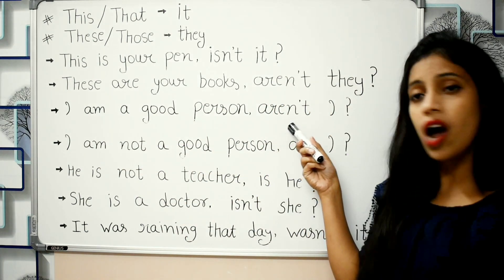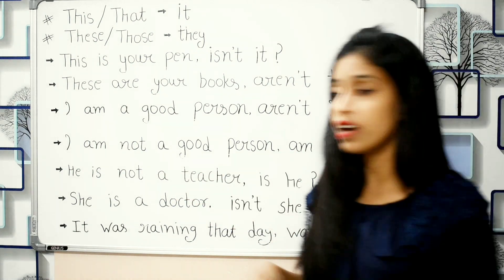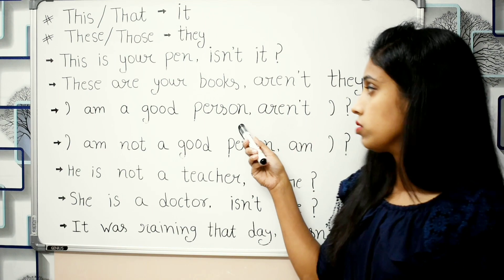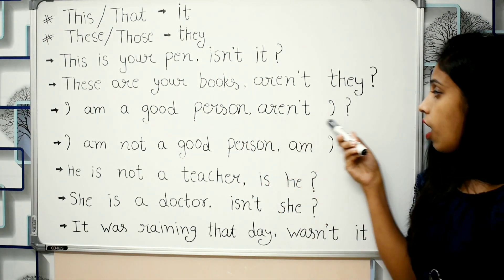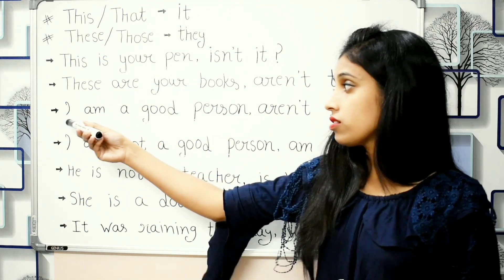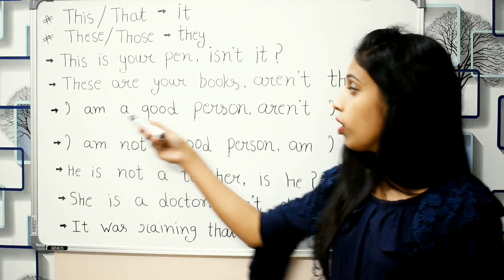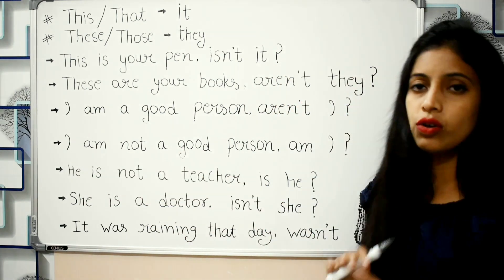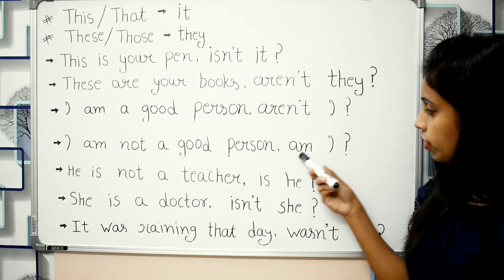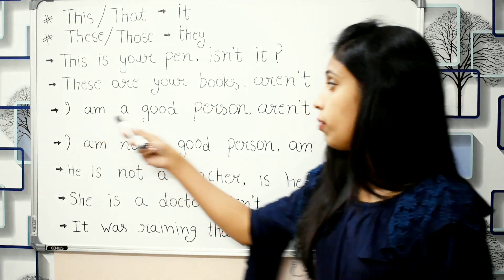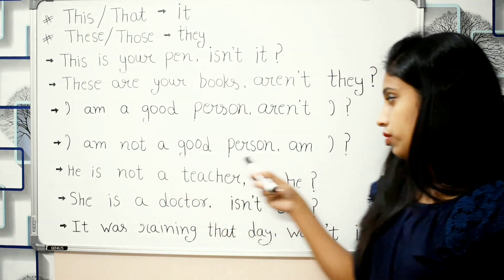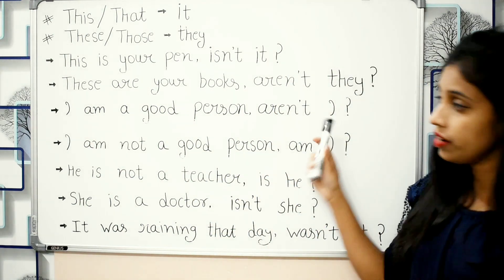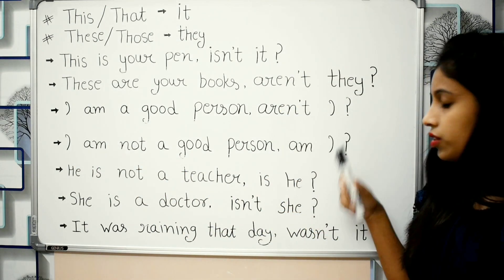There is a special case when the sentence starts with 'I am'. If the statement is positive — 'I am a good person' — then the question tag is 'aren't I?' And if the statement is negative — 'I am not a good person' — then the question tag is 'am I?' The main rule remains the same: positive statement gives negative tag, negative statement gives positive tag.